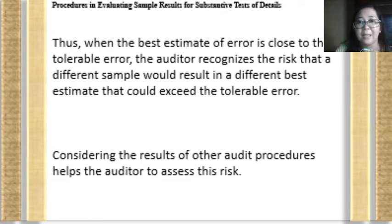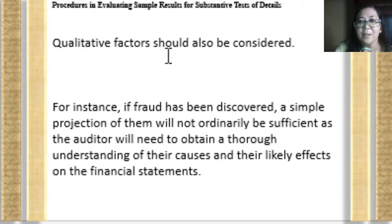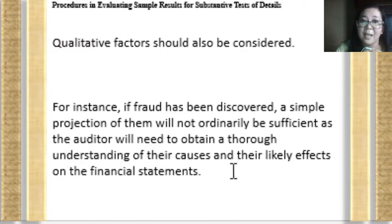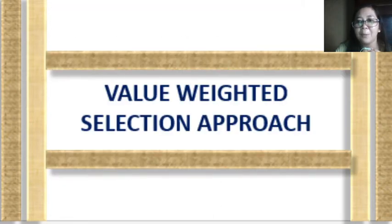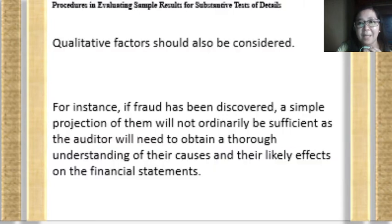Qualitative factors must also be considered. For instance, if fraud has been discovered, a simple projection of errors will not be sufficient — the auditor will need to obtain a thorough understanding of the causes and effects on the financial statements. As mentioned in the previous video lecture, when a deviation exists, the reasons behind it should also be considered by the auditor and discussed with management.